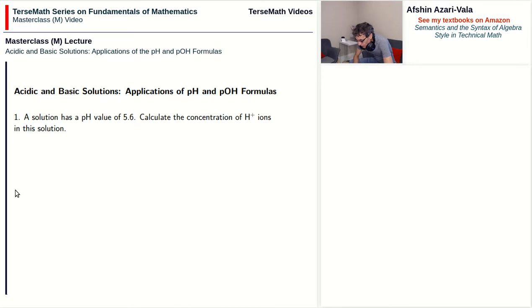Problem number one: a solution has a pH value of 5.6. Calculate the concentration of H plus ions in this solution.